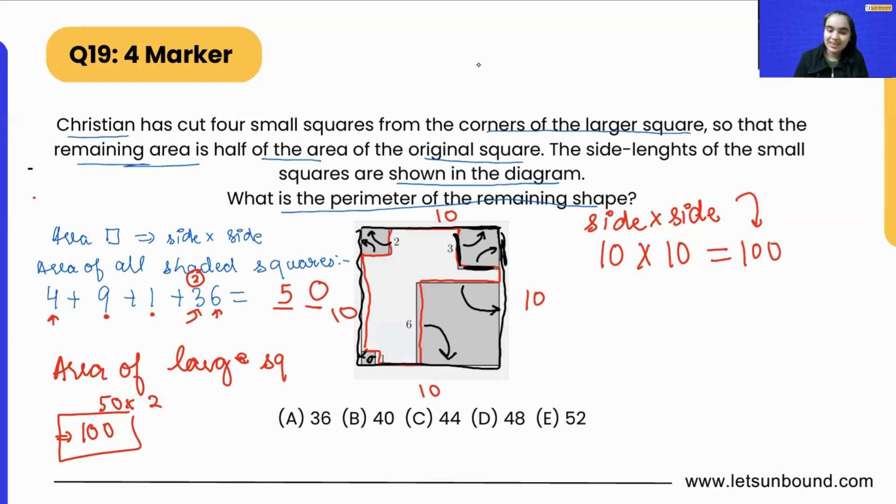Now to find out perimeter of the square, what we need to do is four times the side length, that is 10, which is 40. Done! So we got our answer, that is option B, 40. Pretty easy, right?